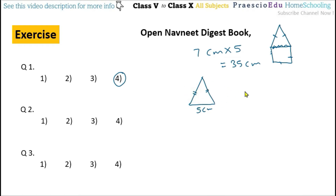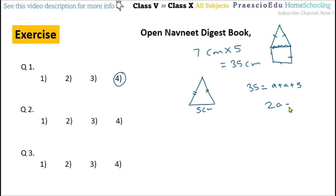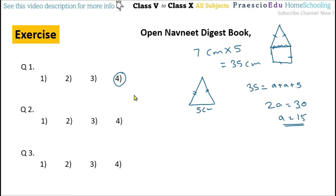The perimeter is 35, so 35 = a + a + 5, which means 2a = 35 − 5 = 30. So a = 30 ÷ 2 = 15. Therefore a = 15 cm, which means option number 3 is the correct one.